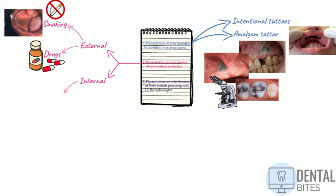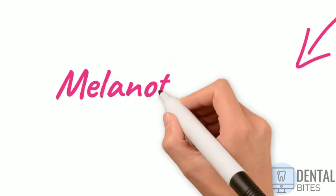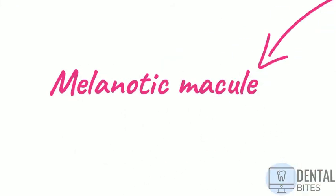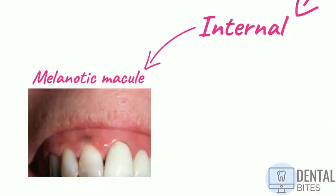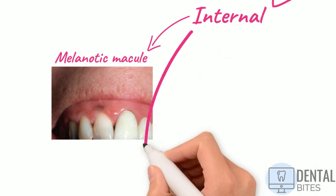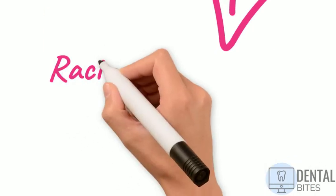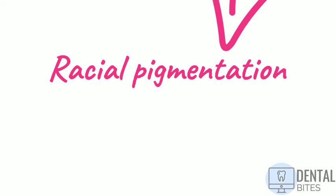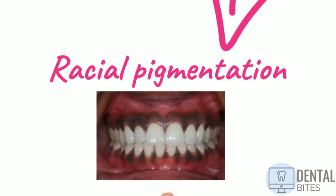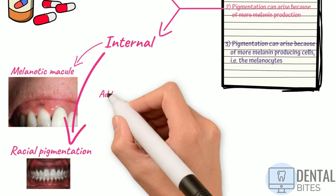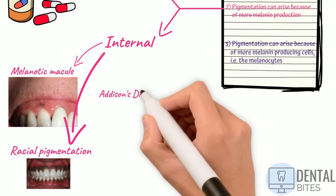For the internal causes, there are a number of things that can cause more melanin to be produced, and we'll touch on these one by one. For example, an oral melanotic macule, which is essentially the equivalent of a skin freckle in the oral cavity. These are idiopathic, which means the cause is unknown. You essentially get increased melanin deposition with no increase in the melanocyte numbers, and there is no risk of malignant transformation. Secondly, racial pigmentation, which can be perfectly normal in darker-skinned individuals.